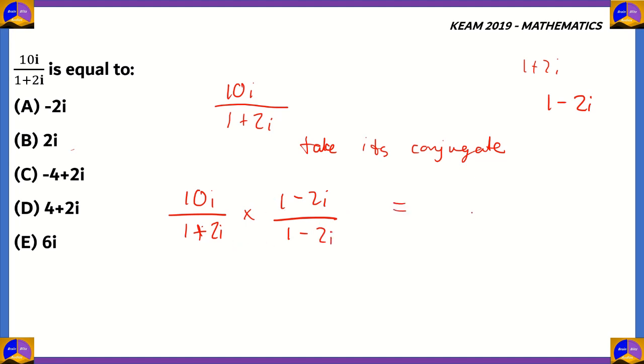We get 10i times 1 minus 2i on the numerator and in the denominator, it's a plus b times a minus b. So, you get a squared minus b squared. That is 1 squared minus 2i whole squared.